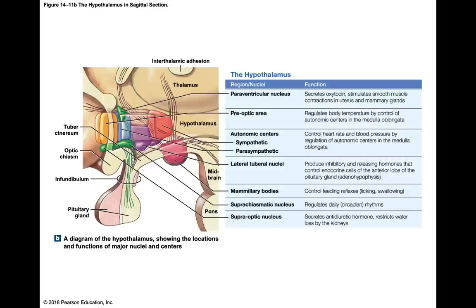The hypothalamus controls autonomic function, regulating the pons and medulla to help control heart rate, blood pressure, respiration, and digestion. It also coordinates voluntary and autonomic functions to help you prepare for an emergency — for example, if you hear a fire alarm, your heart rate and respiratory rate automatically go up.